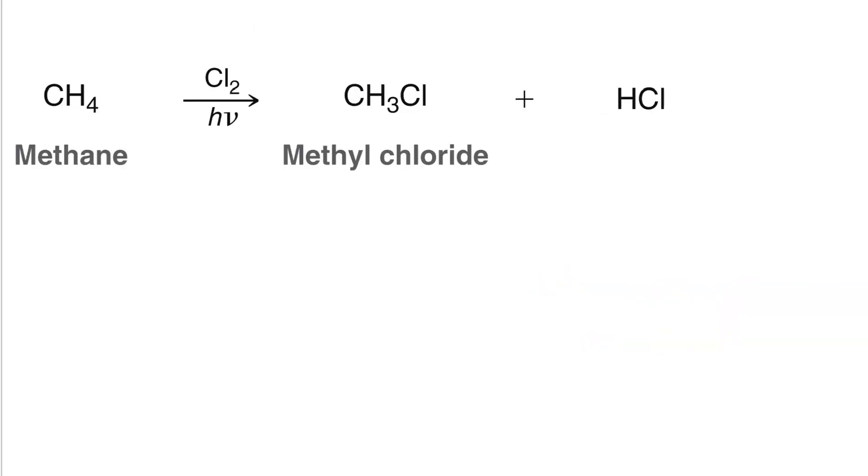Here is the reaction. We take methane and we react it with chlorine gas in the presence of ultraviolet light. And we end up with methyl chloride and HCl. Methyl chloride we can do reactions with. It is an alkyl halide.